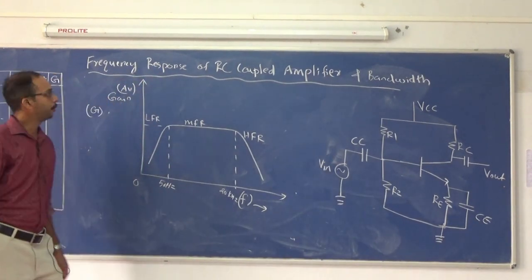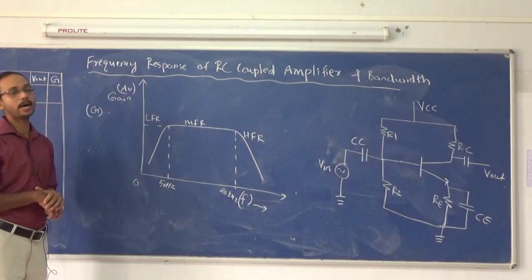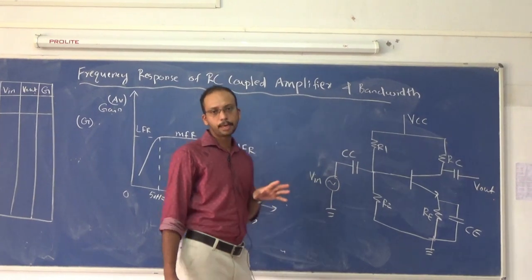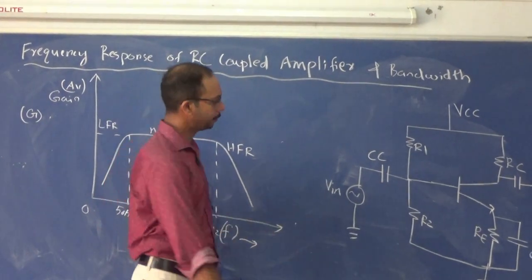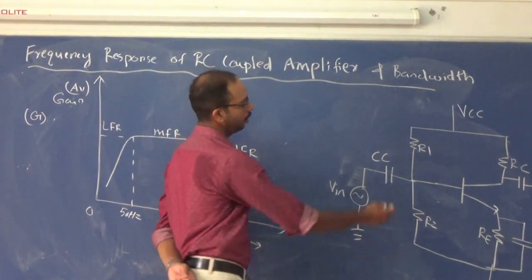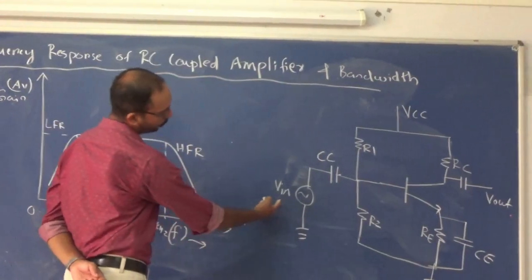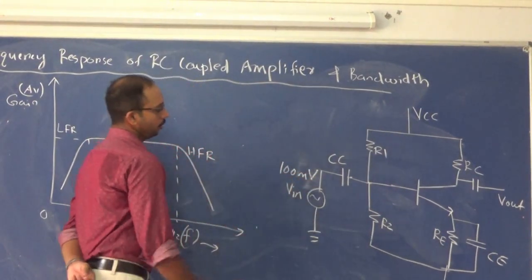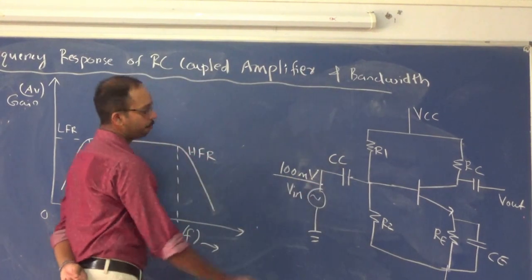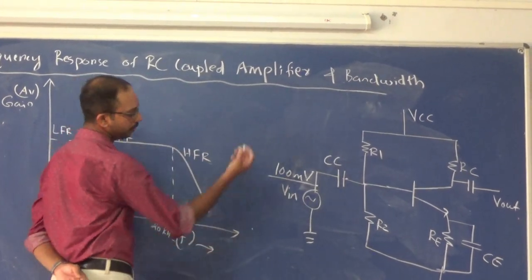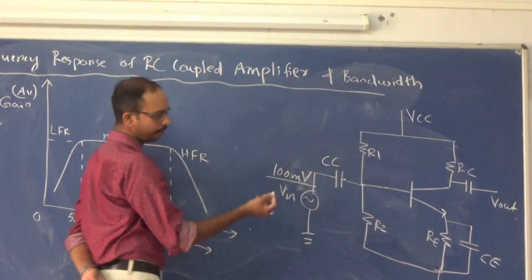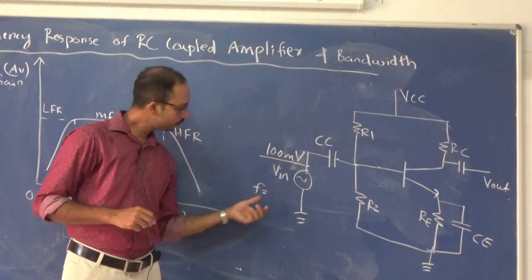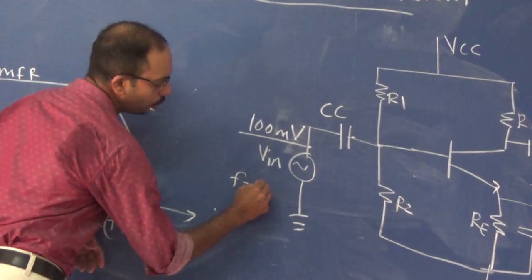The next topic is the frequency response of the RC coupled amplifier. The coupling capacitor is a blocking capacitor, and the input voltage is very small and needs to be amplified. For example, consider an input voltage of 100 millivolts and apply a frequency of 100 Hz.